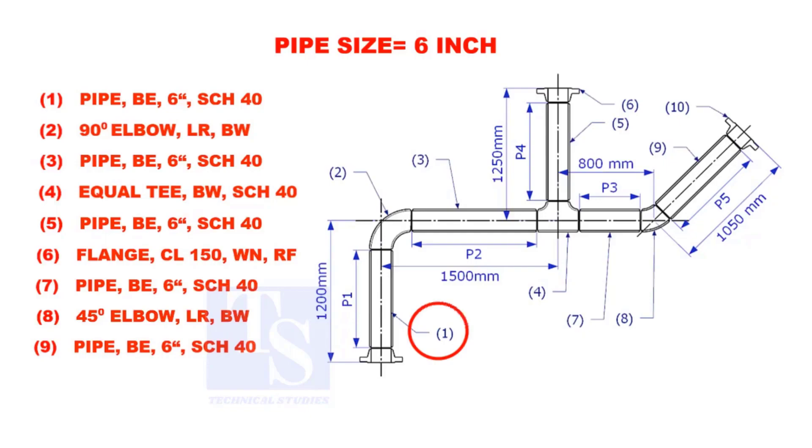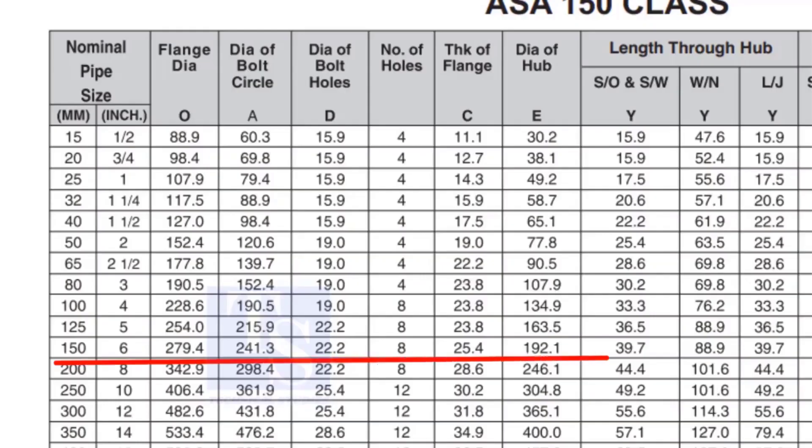Let us calculate the length of pipe 1. To calculate the length of pipe 1, we need to reduce the flange height and the elbow center from the measurement 1200mm. Check the height of the flange in the table. Since the pressure rating is 150, the height of the flange is 88.9mm. Note down the height.